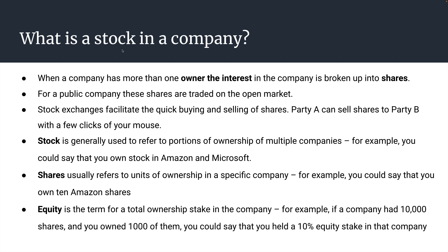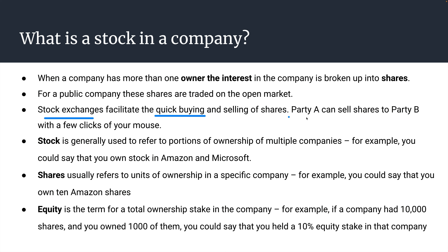So far I've used the term stock, but we haven't really defined what a stock is. Let's look into what a stock in a company is. Typically, when a company has more than one owner, you break the ownership interest up into shares. You might own one share, you might own many shares. The number of shares you own represents the percentage ownership you have in the company. For a publicly traded company, these shares trade on the open market, meaning you can sell your interest in the company or buy interest in the company at any time as long as the market is open. You do this through your stock broker. A stock exchange quickly facilitates the buying and selling of shares. Party A can sell shares to party B with only a few clicks of their online broker.